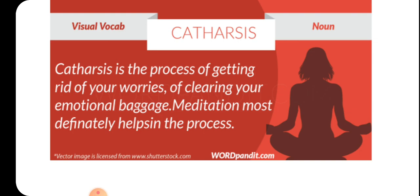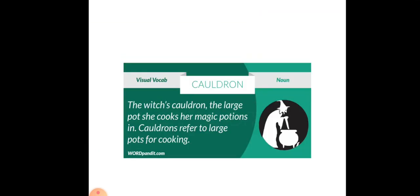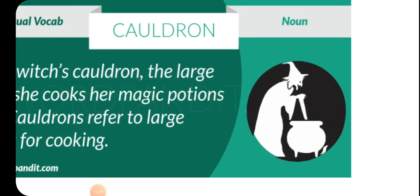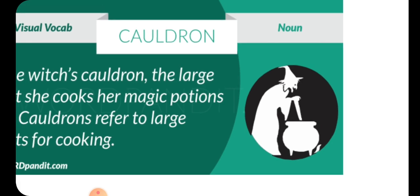The next word is 'cauldron.' Cauldron is a very easy word. You can see a large deep pot used for boiling liquids or cooking food over fire. My association for this word is 'drum' — associate cauldron with drum. It's a large drum used for boiling liquids or cooking food. Cauldron is a large deep pot.